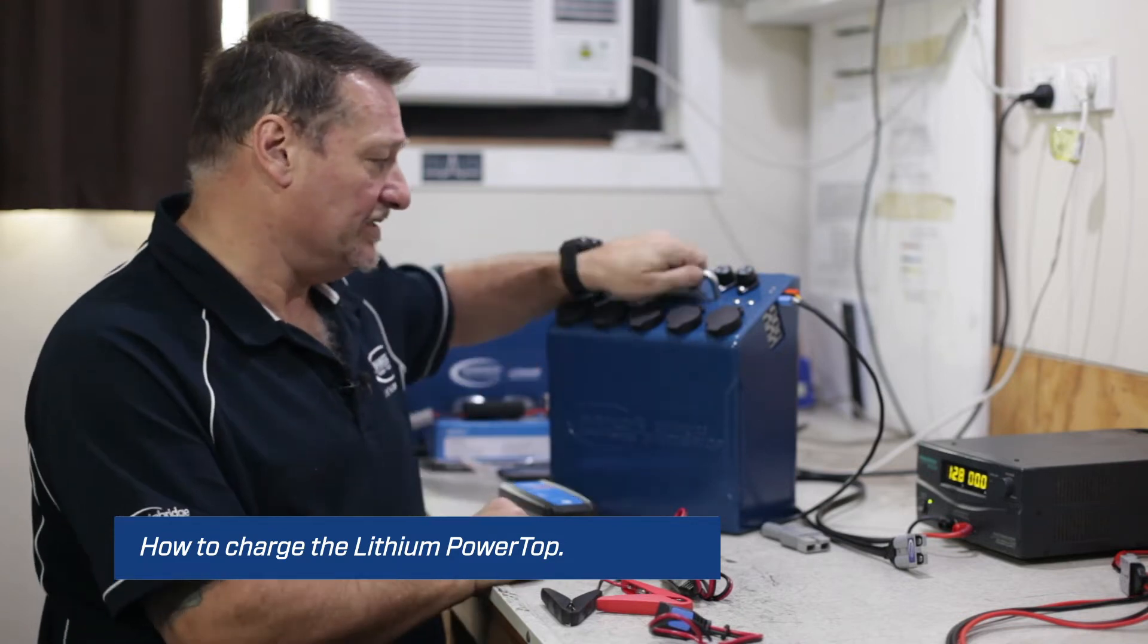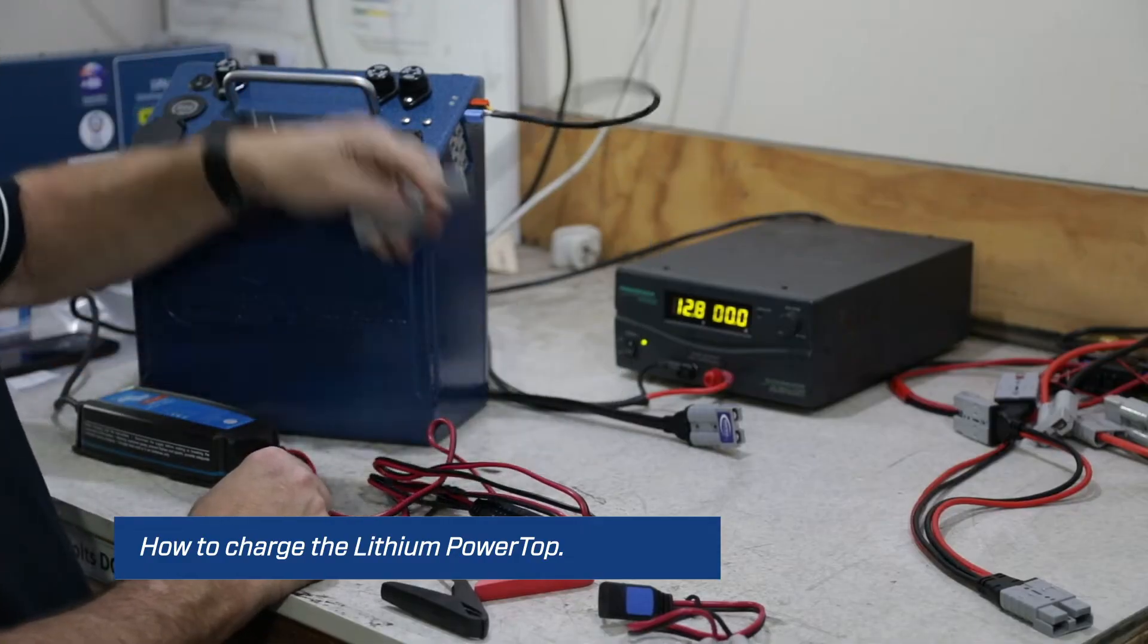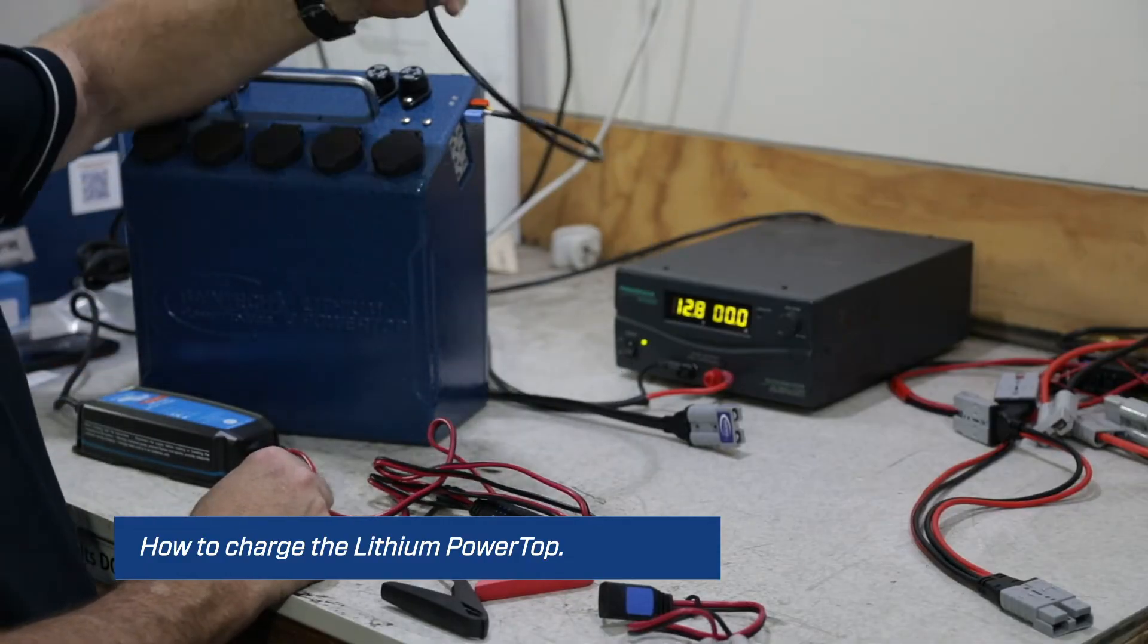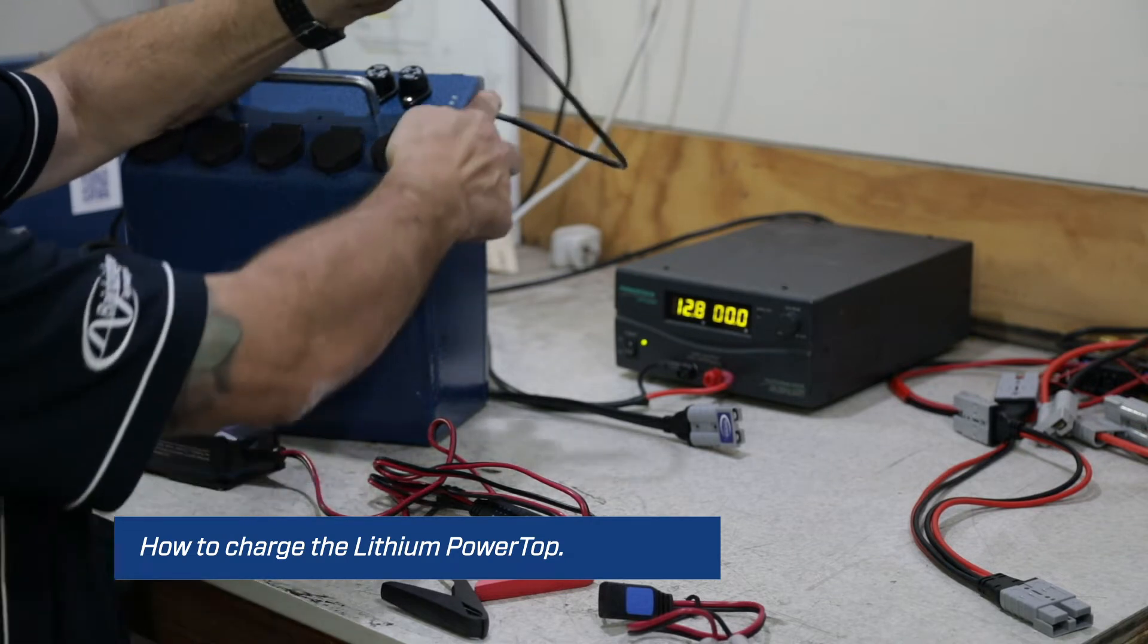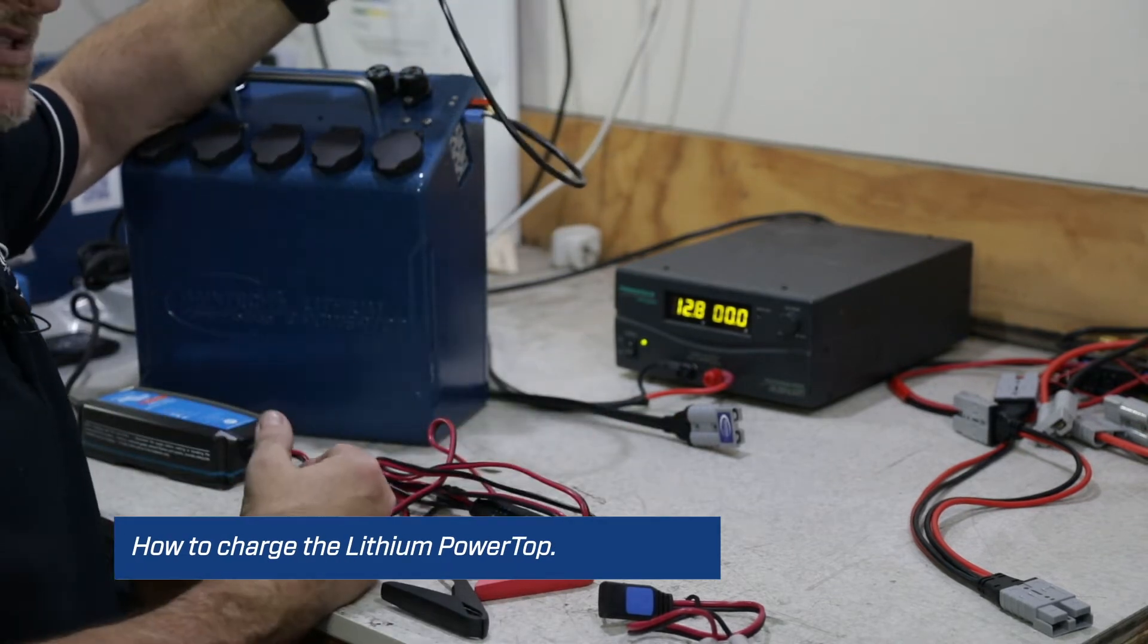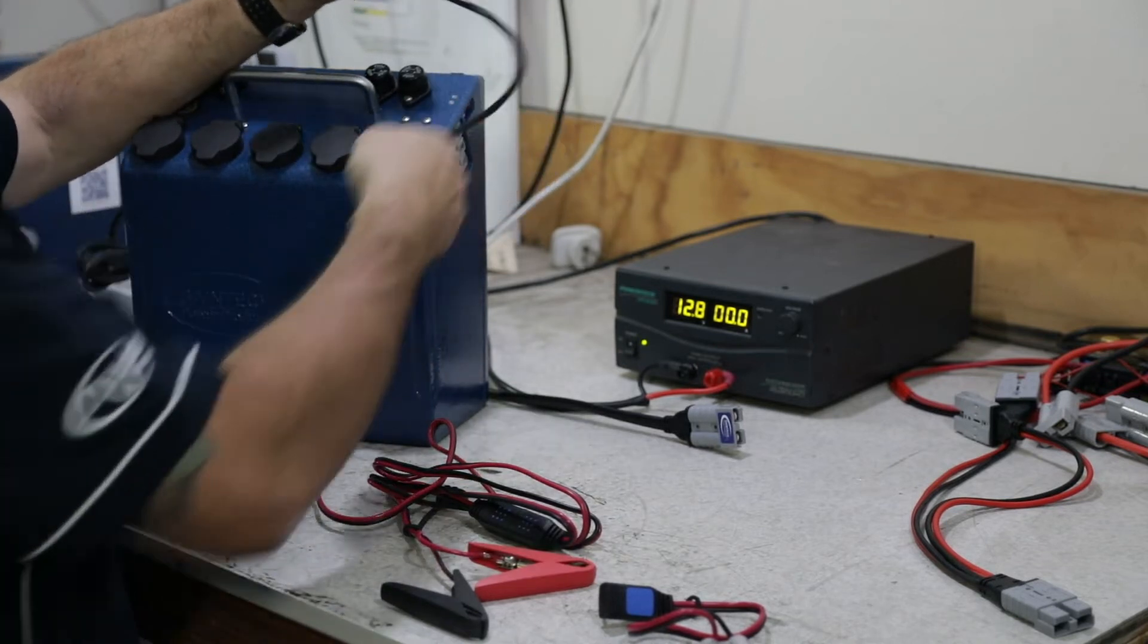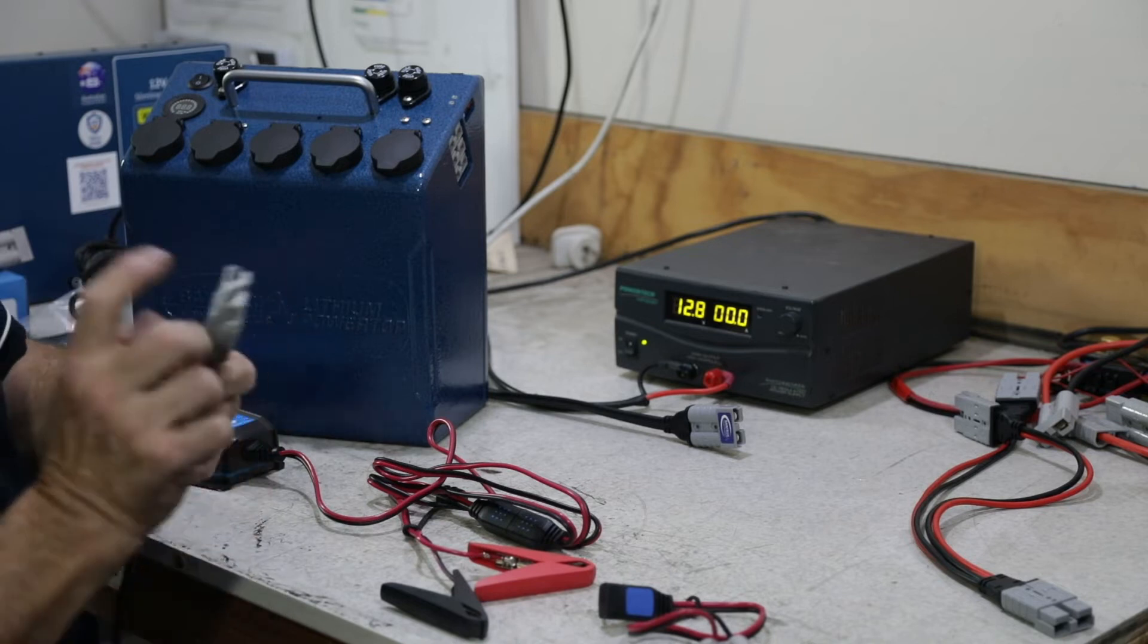Now this one I'm using today has the DC to DC built in. It comes with this plug that you can plug into a source that can supply a 20 amp load. If not, you would use the other lead with the cigarette lighter that's only capable of 10 amp supply.